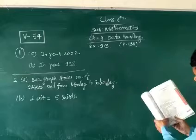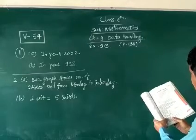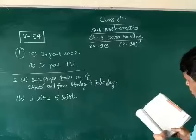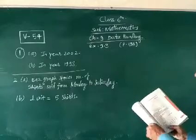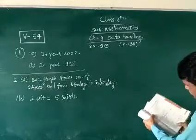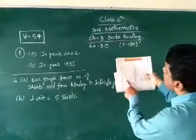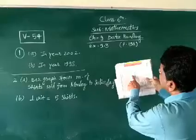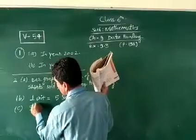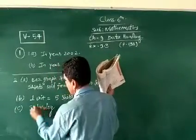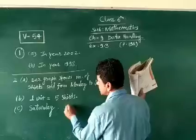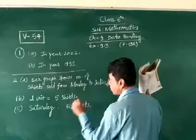Question number C: On which day were the maximum number of shirts sold? I will tell you how many shirts were sold on that day. The most shirts were sold on Saturday and it is approximately 60. Question C, we are looking at Saturday, 60 shirts.